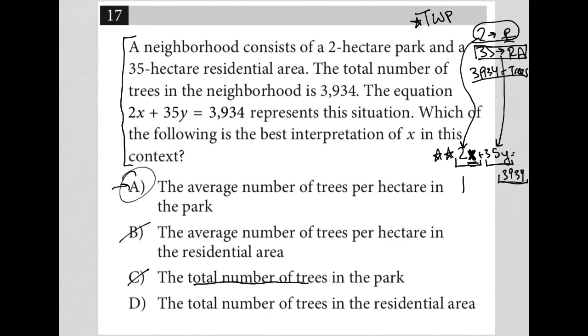Why would I be multiplying that by 2? Why would I want to double the total number of trees in the park to figure out the total number of trees in the neighborhood? So I think x is just the average number of trees in the park per hectare, and that's why I multiply by 2—because I have 2 hectares.